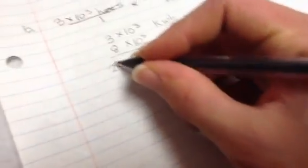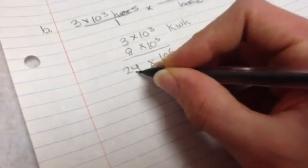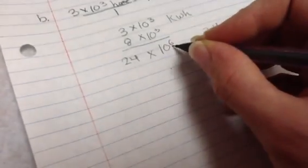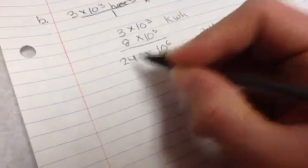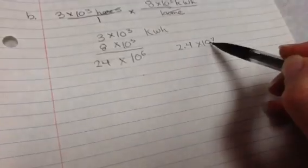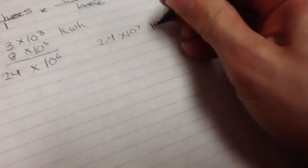Remember, if this number in front of the exponent is bigger than 9, you're going to have to add to the exponent to make it okay. If it was less than 1, then I need to subtract from the exponent when I rewrite it. So, anyway, that's kilowatt hours, and I'm done with B. Piece of cake, right?